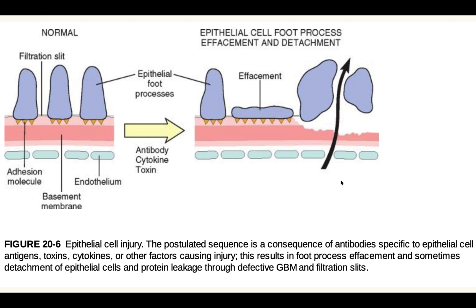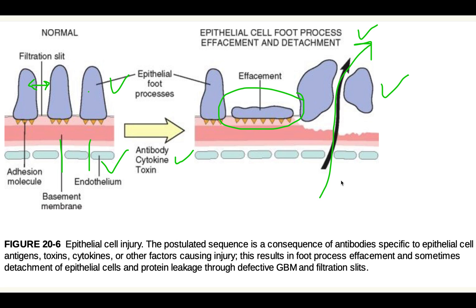In normal conditions, the foot processes are intact. There is a fenestrated endothelium with loose gaps, and the visceral epithelium has foot processes with filtration slits between them through which filtration takes place. In minimal change disease, due to certain immune reasons — increase in cytokines and antibodies — there is effacement and detachment of the foot processes. This leads to increased filtration, allowing proteins to pass from blood into urine, causing proteinuria.